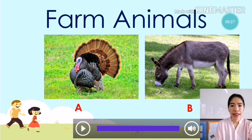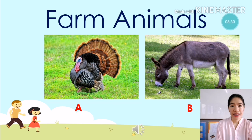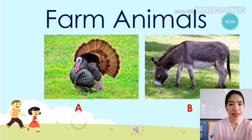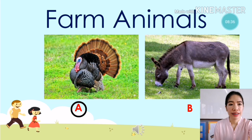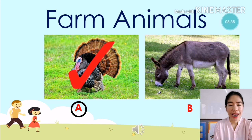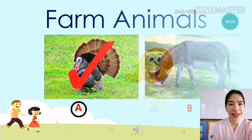Next — what animal is it? A, turkey, or B, donkey. My answer is A, turkey. Is it correct? Yes, it's correct! Very good.